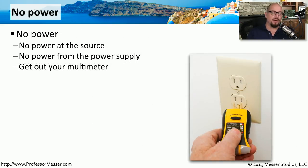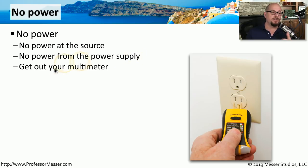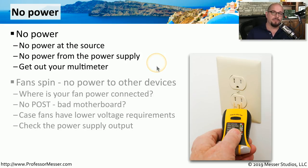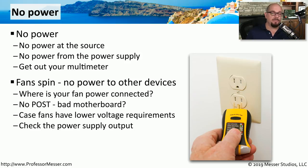One problem that's difficult to work around is when you have no power at all. You press the power on your system, and you're not getting any lights or any activity. The question then is: is there no power at the power source or the power outlet, or is there no power coming from your power supply? One way to tell is to get your multimeter, be able to test the AC power at your outlets, and the DC power coming off of your power supply on the inside of your computer. The problem might also be that some components inside of your computer appear to be getting power, but other components are not.